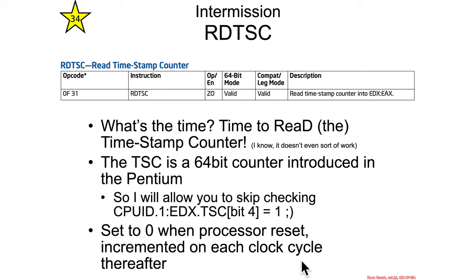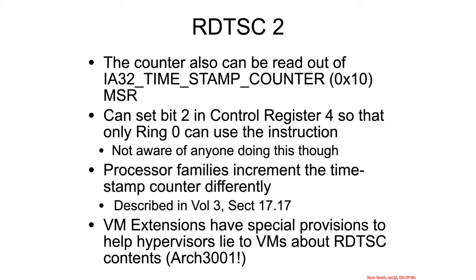So each tick of the clock, the CPU clock that controls execution will increment the value in the timestamp counter. You can also read this directly out of the timestamp counter MSR, which is number 10, so you know it's an old MSR.